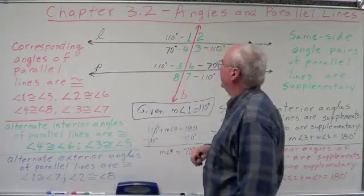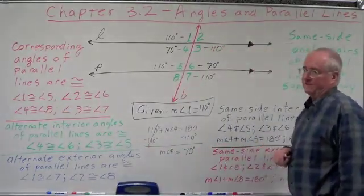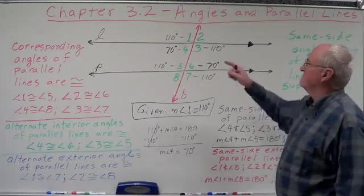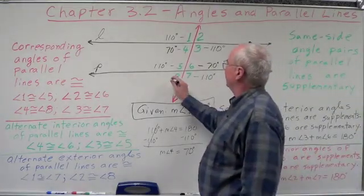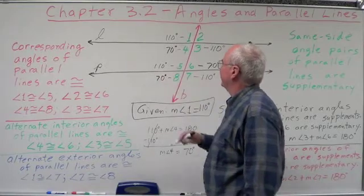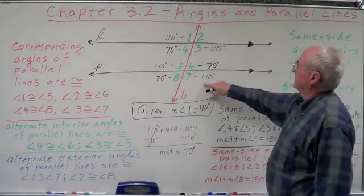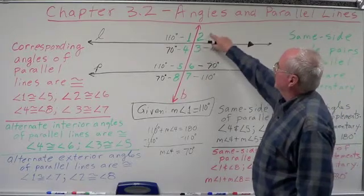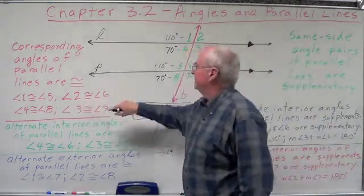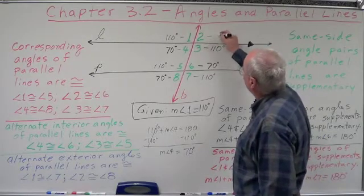Corresponding pairs: angles 4 and 8 are corresponding pairs. What do we know about corresponding pairs? They're congruent. If they're congruent, their measures are equal. Therefore, angle 8 is 70 degrees. What about corresponding angles 2 and 6? They're also congruent, so their measures are equal.